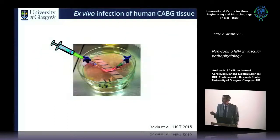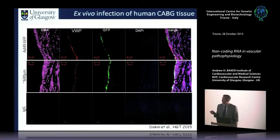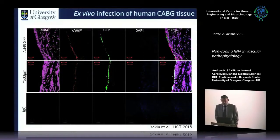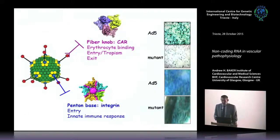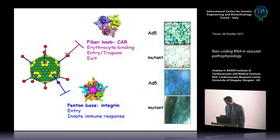Going back to the human saphenous vein setting, this virus is very good at infecting the surface — essentially all endothelial cells become infected. It's a very nice vascular-tropic adenovirus that may be useful for cardiovascular applications in the future.